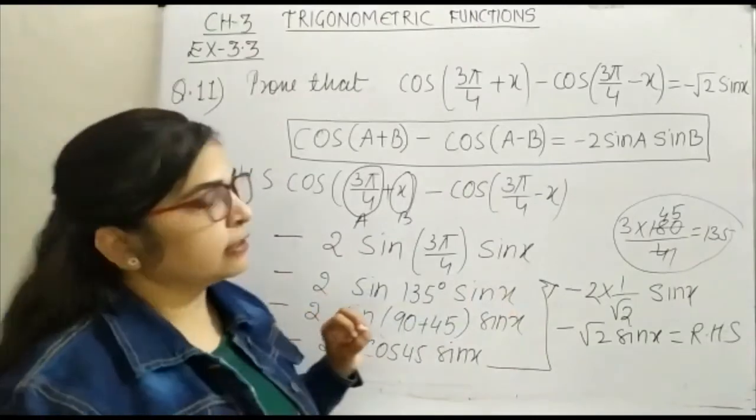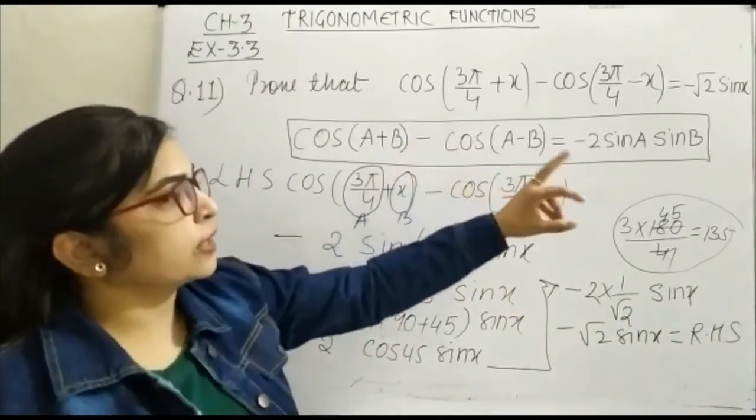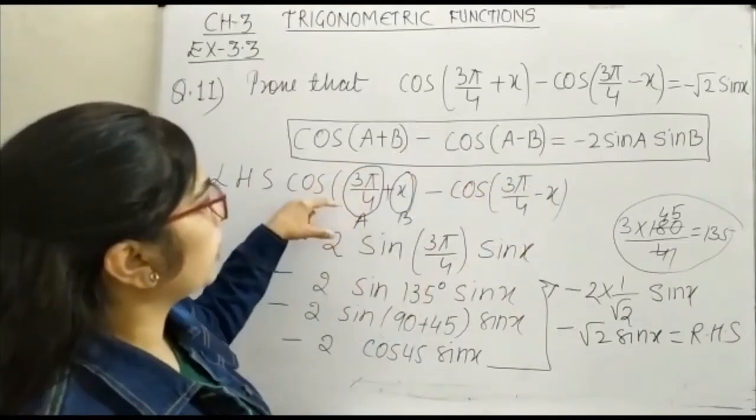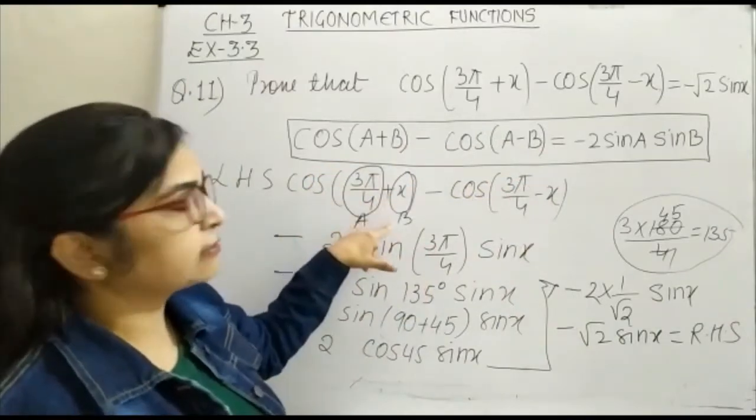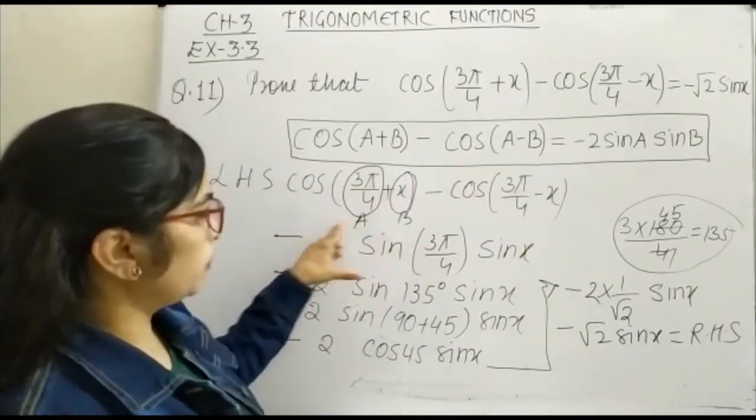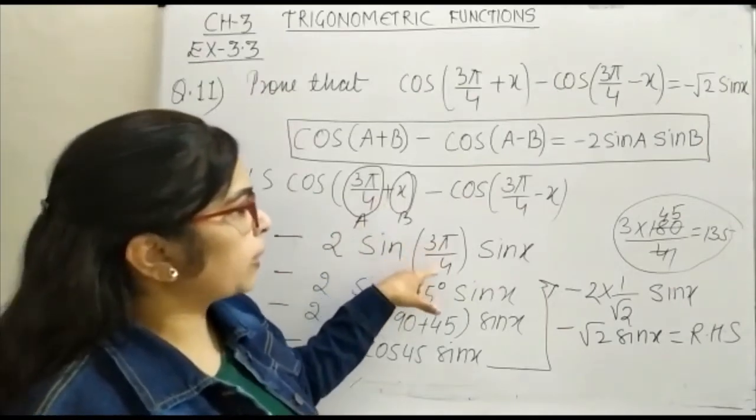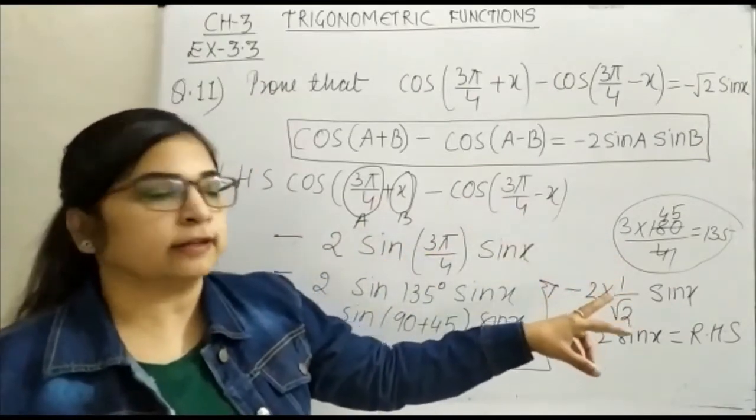So we can see here, we have applied the formula minus 2 sin A sin B, here 3π/4 is your A value and x is your B value. So if you substitute this, then 3π by 4 is converted and that is equal to 135.